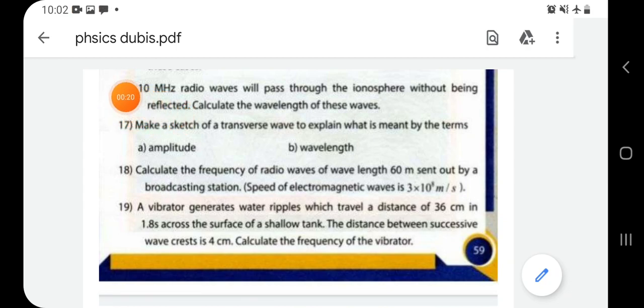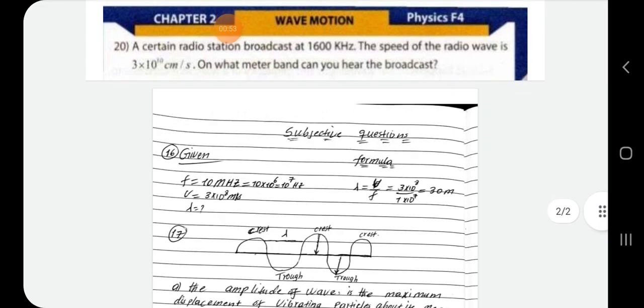In chapter 2, I would like to ask a question. Radio waves will pass through the ionosphere without being reflected. Calculate the wavelength of these waves. Now we know the lambda and the frequency. The speed of the velocity is constant, 3 times 10 to the power of 8 meter per second. This is right.